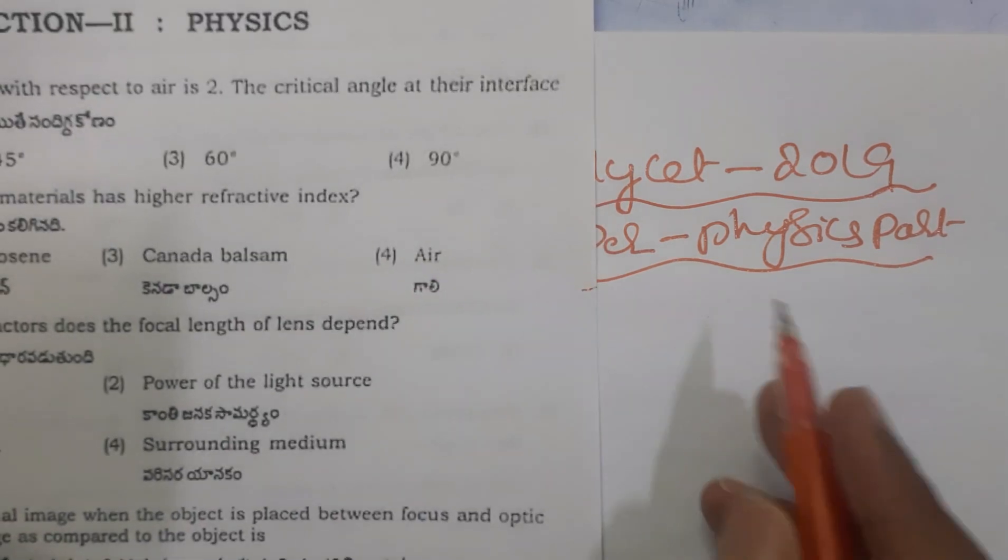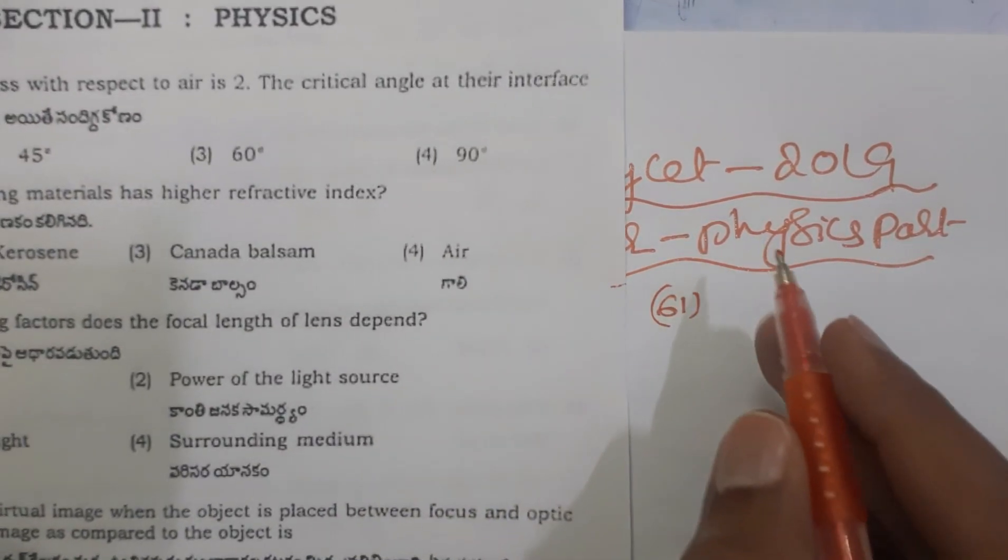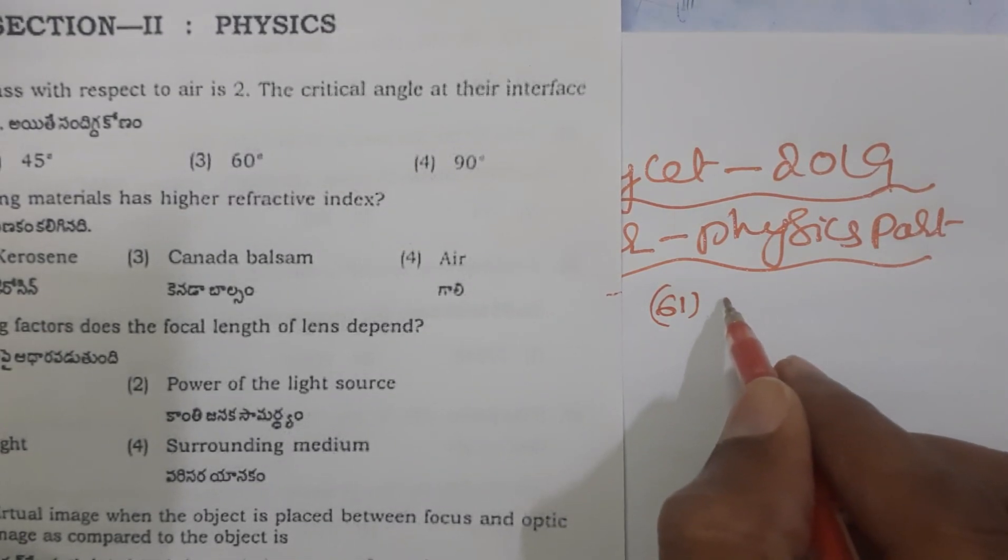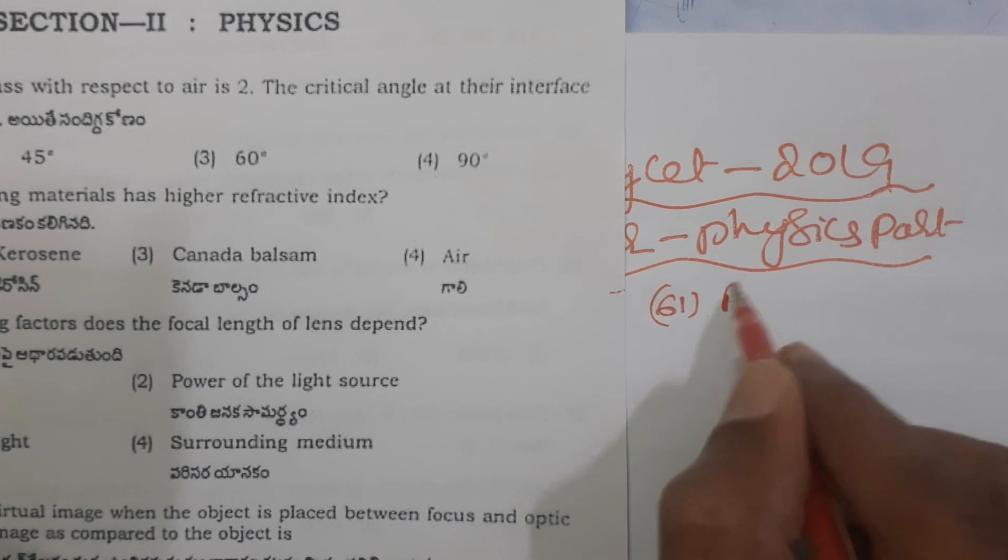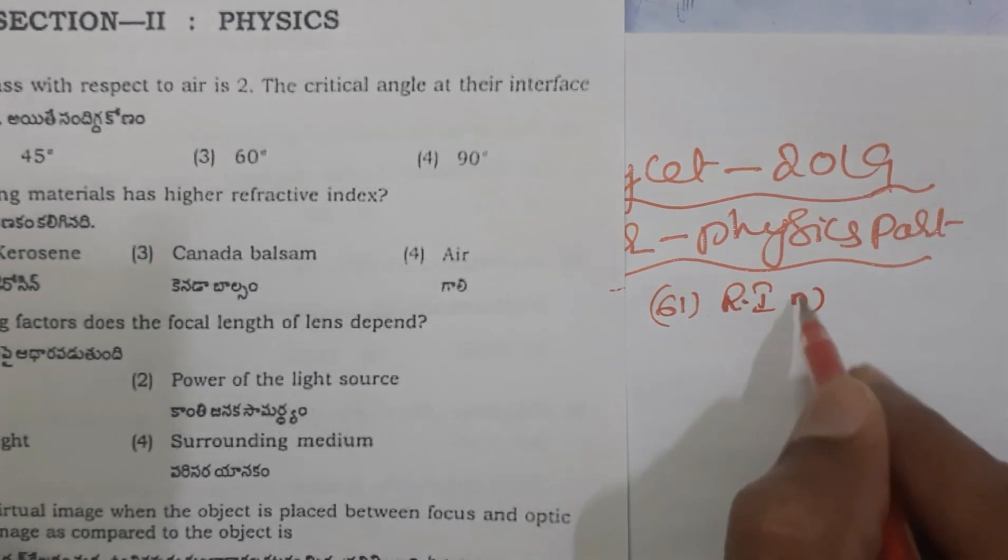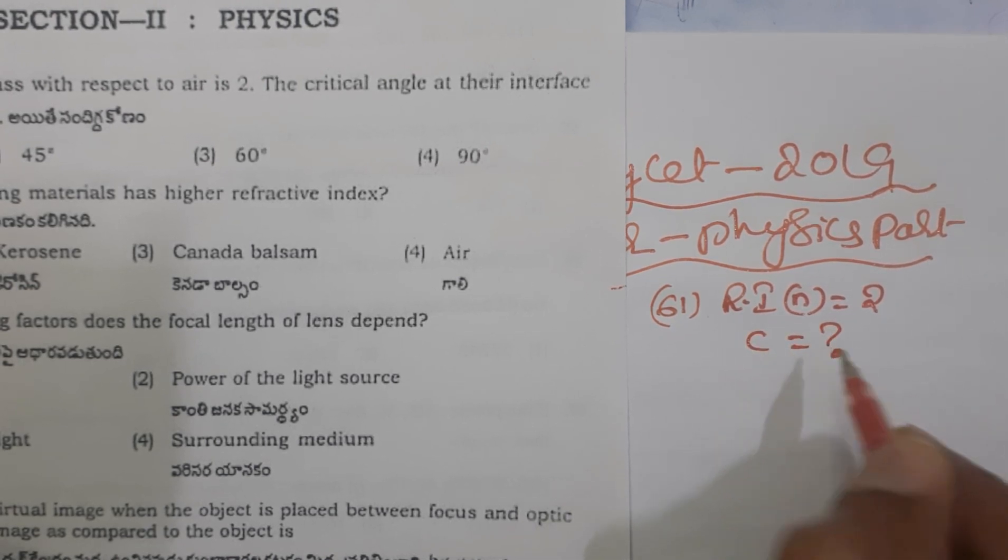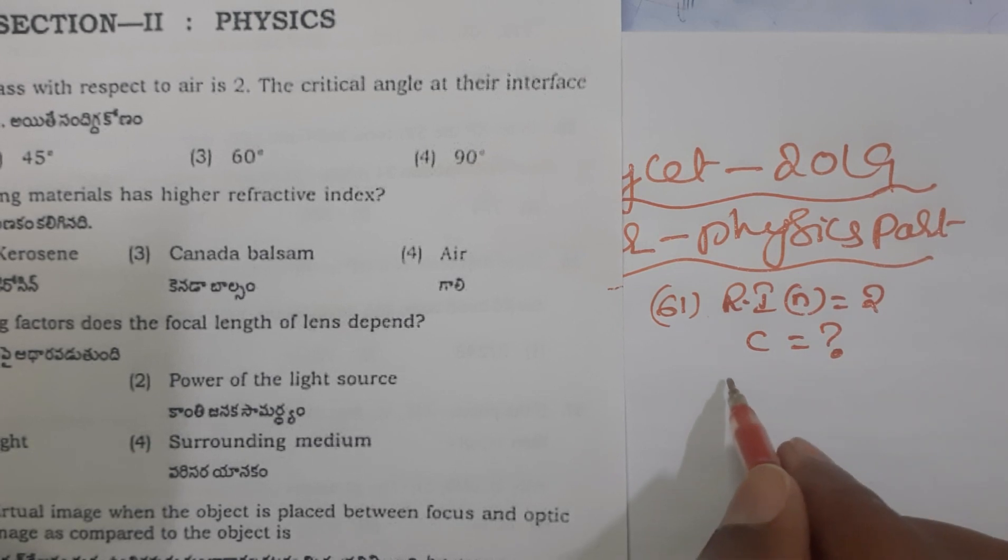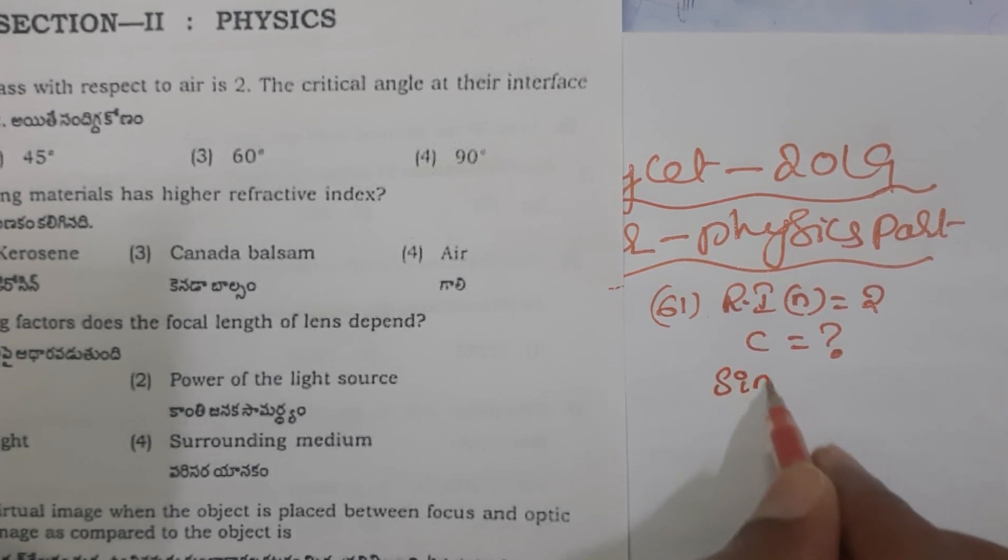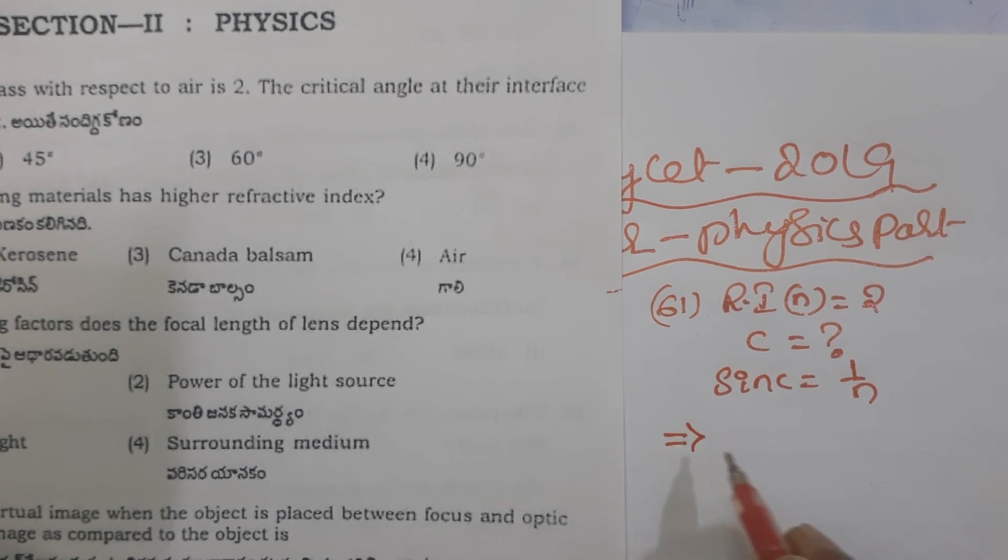For question 61, critical angle is what we want to find. Refractive index n is given as 2, and we want to find the critical angle C. We know the relation between critical angle and refractive index is sin C equals 1 by n. This implies C equals sin inverse of 1 by n.